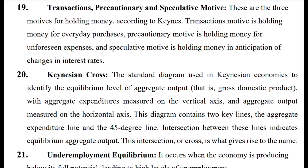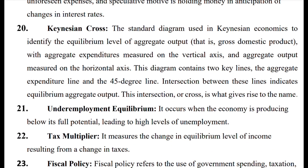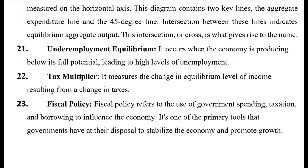The Keynesian cross is a standard diagram used in Keynesian economics to identify the equilibrium level of aggregate output. The vertical axis shows aggregate expenditure and the horizontal axis shows aggregate output. The diagram contains two key lines: the aggregate expenditure line and the 45-degree line. The intersection between these lines indicates equilibrium aggregate output. This intersection may occur under conditions of underemployment, meaning there are unused resources and unemployment.